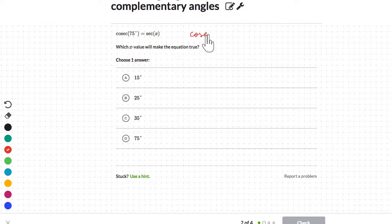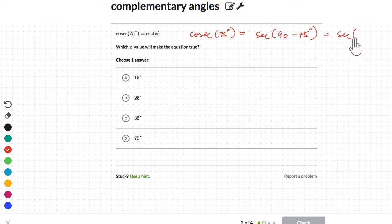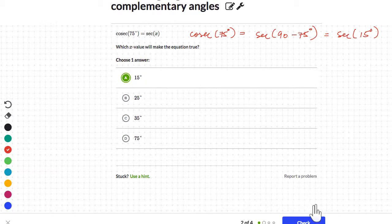So cosecant of 75 degrees equals, that's right, we just did it. So you know that it's secant of 90 minus 75 degrees. So 90 minus 75 equals secant of 15, right? So 15 plus 75 will be 90. So that's correct. So secant of 15 degrees. Let's verify.